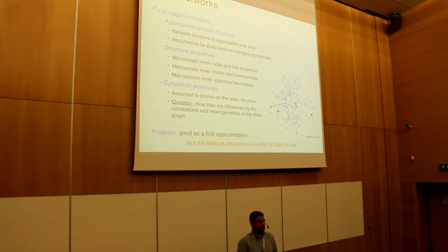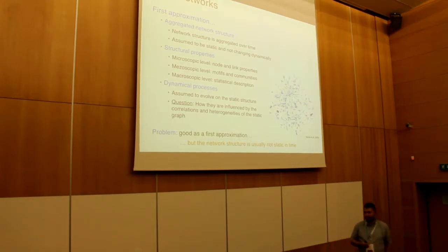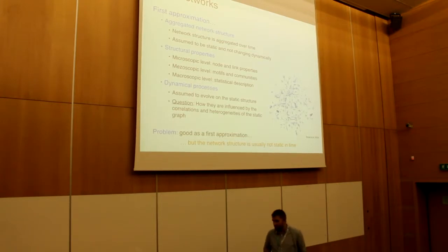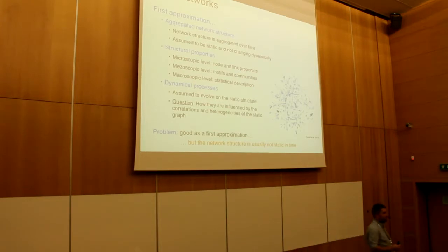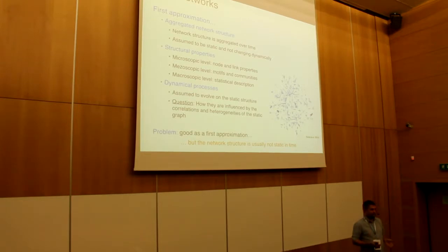On the microscopic level, we were looking for features of nodes and links. At the mesoscopic level, we were discussing communities. At the macroscopic level, we were speaking about the statistical description of complex networks — like degree distribution, average clustering coefficient, average of any properties. In terms of dynamical processes, the assumption was that we have a static structure, and we have a process on top, which means that from the point of the process, all links and nodes are always there.